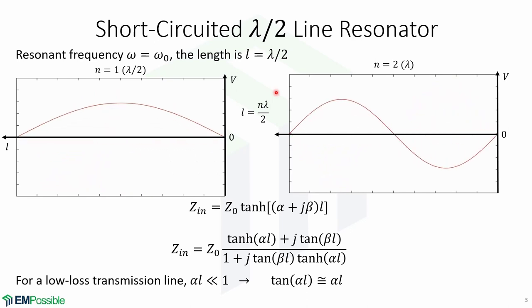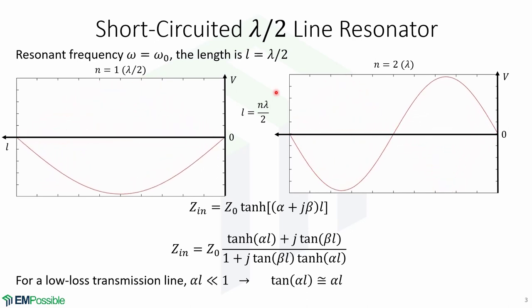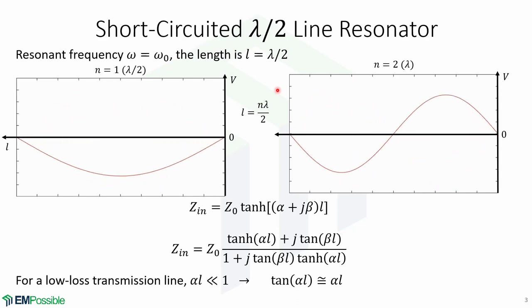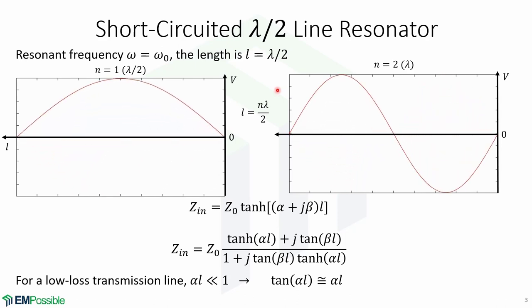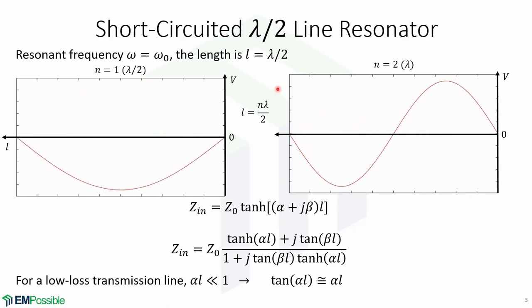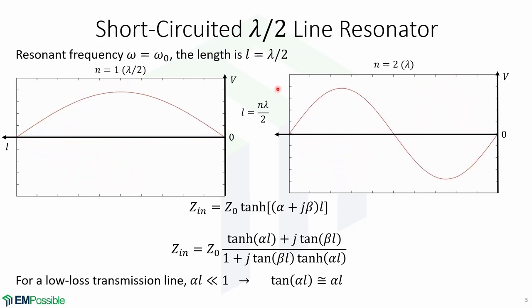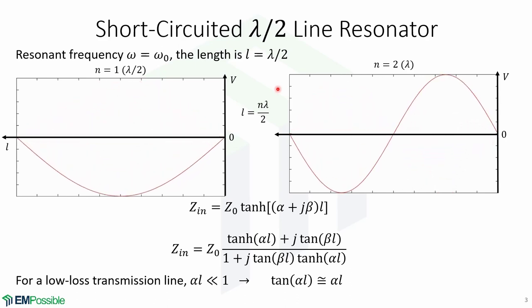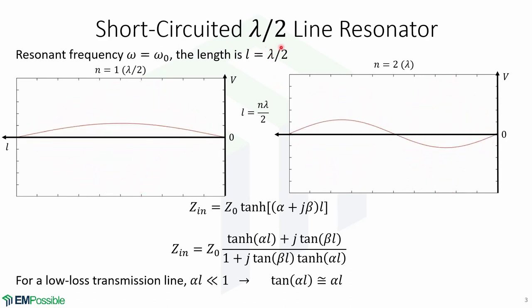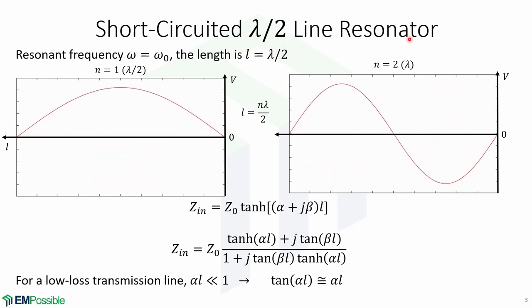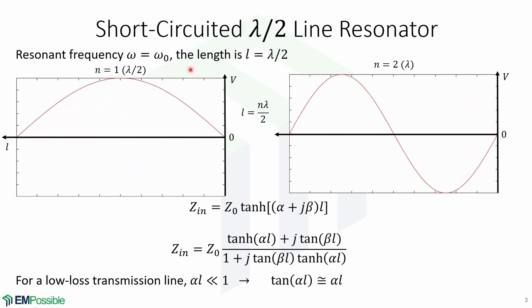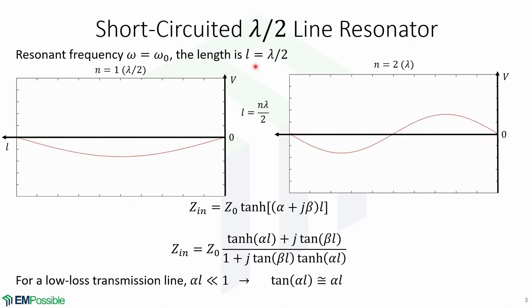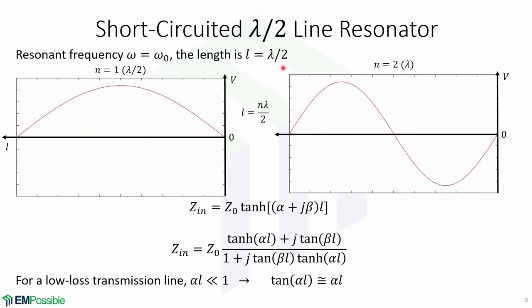As we have seen in this course, ideal lumped circuit elements are often unattainable at microwave frequencies, so we need to use distributed elements like transmission lines. Here we will look at the short-circuited half-wavelength line resonator. At the resonant frequency omega-0, the length is L equal to lambda over 2.